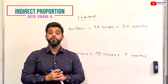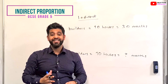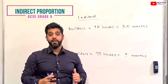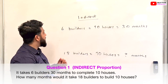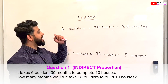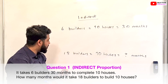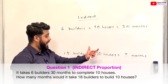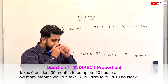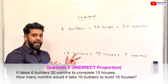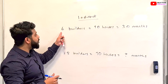Now we move on to indirect proportion, and it's really important that you read the question carefully to understand whether it's a direct or indirect proportion question. Let's read this one: it takes 6 builders 30 months to build 10 houses. How long will it take 18 builders to also build 10 houses?